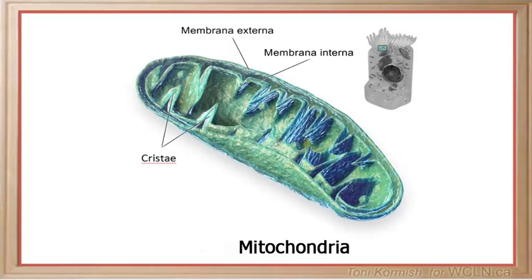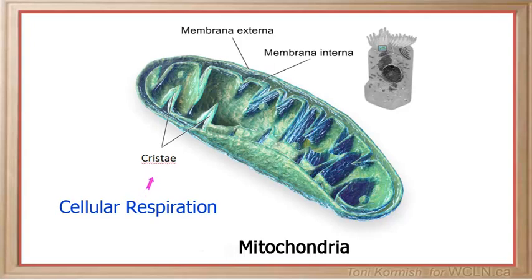ATP is made in an organelle in the cell called the mitochondria. This process is referred to as cellular respiration, and it occurs within the membrane of the mitochondria called the cristae.